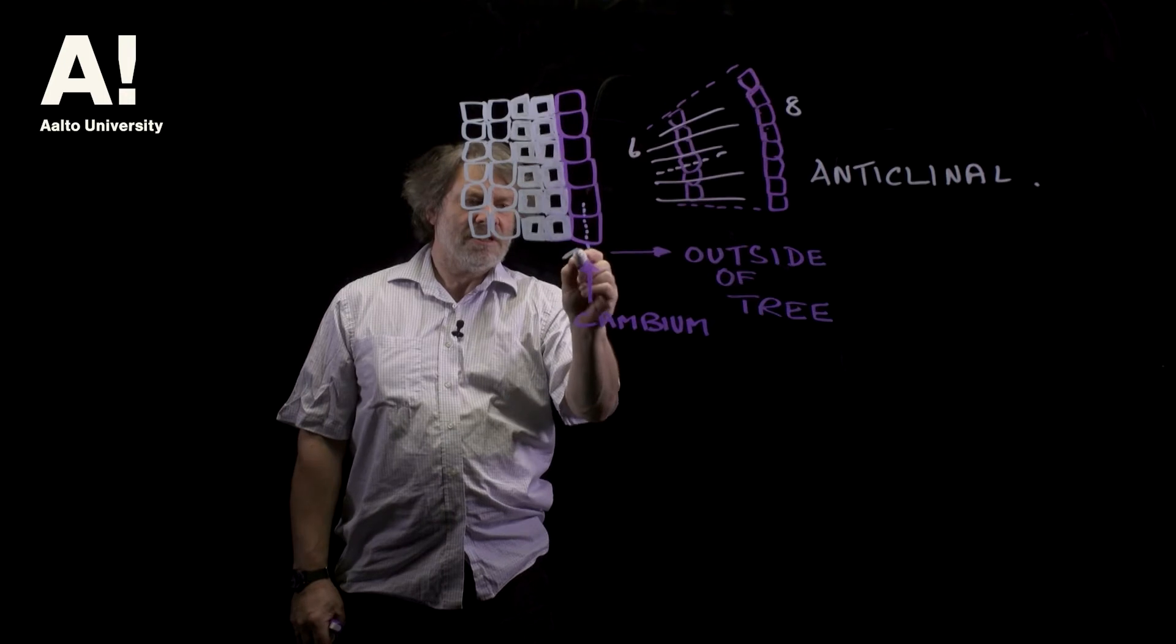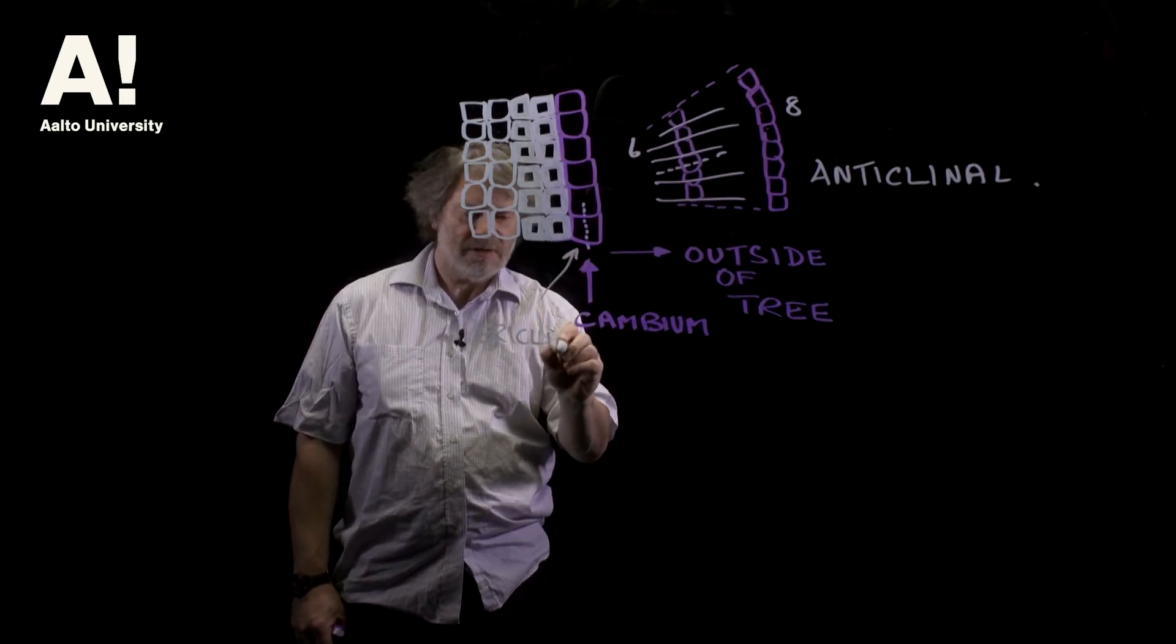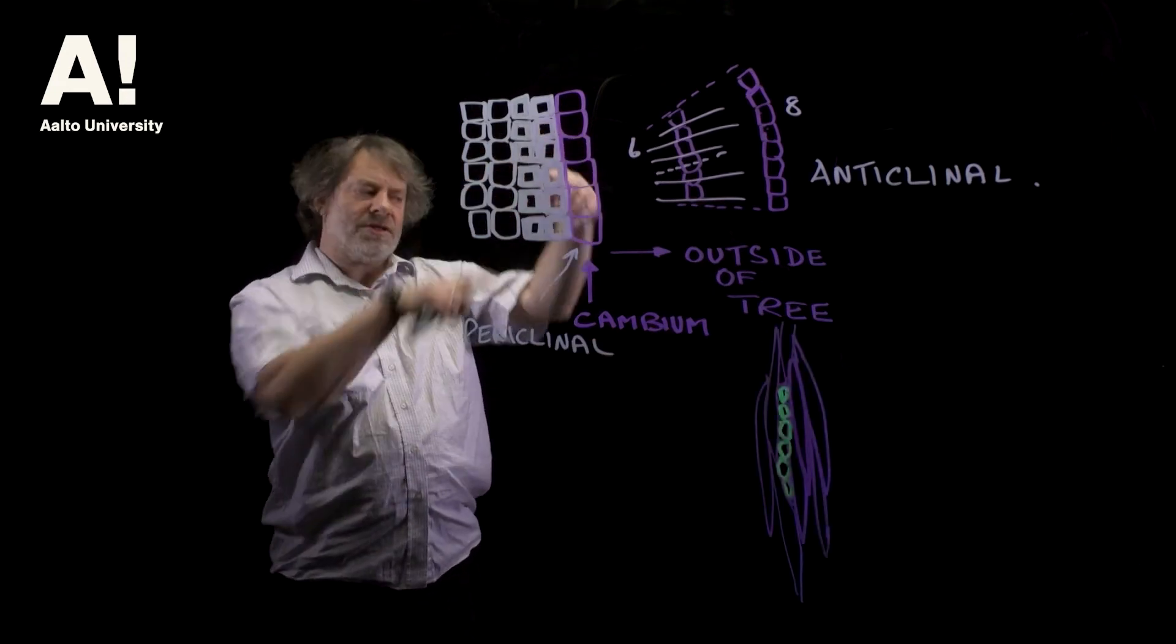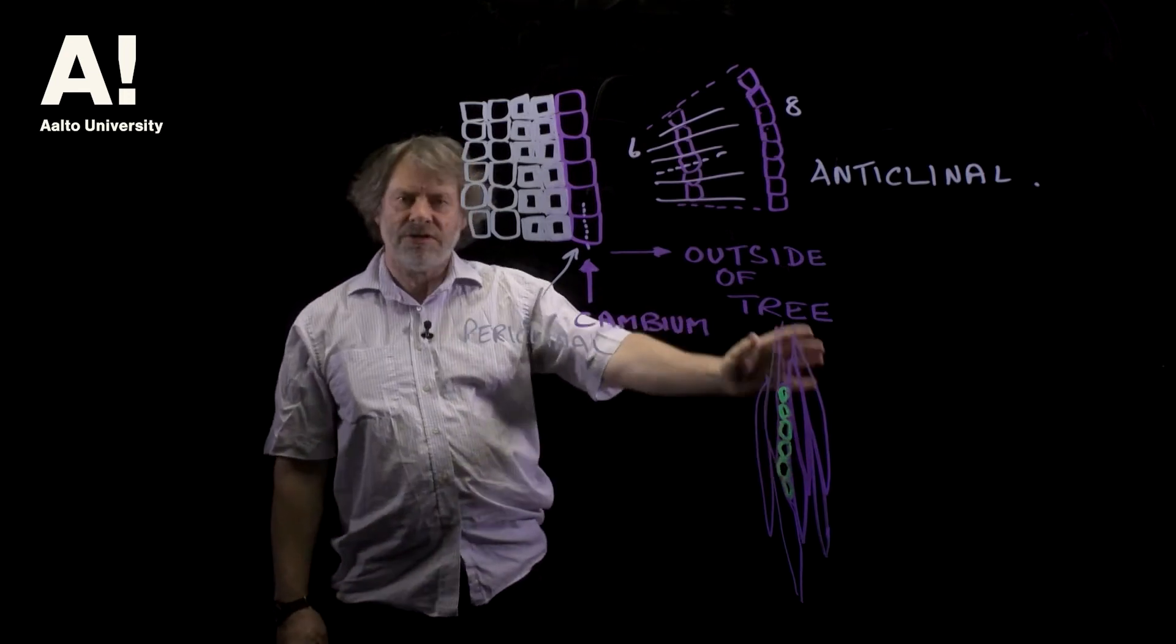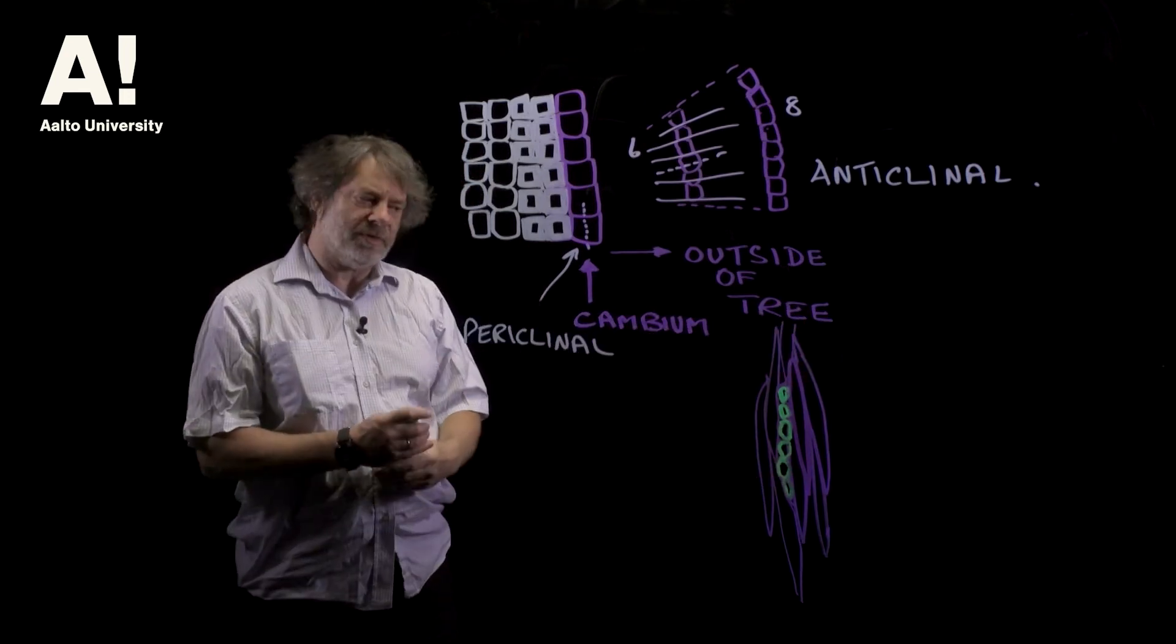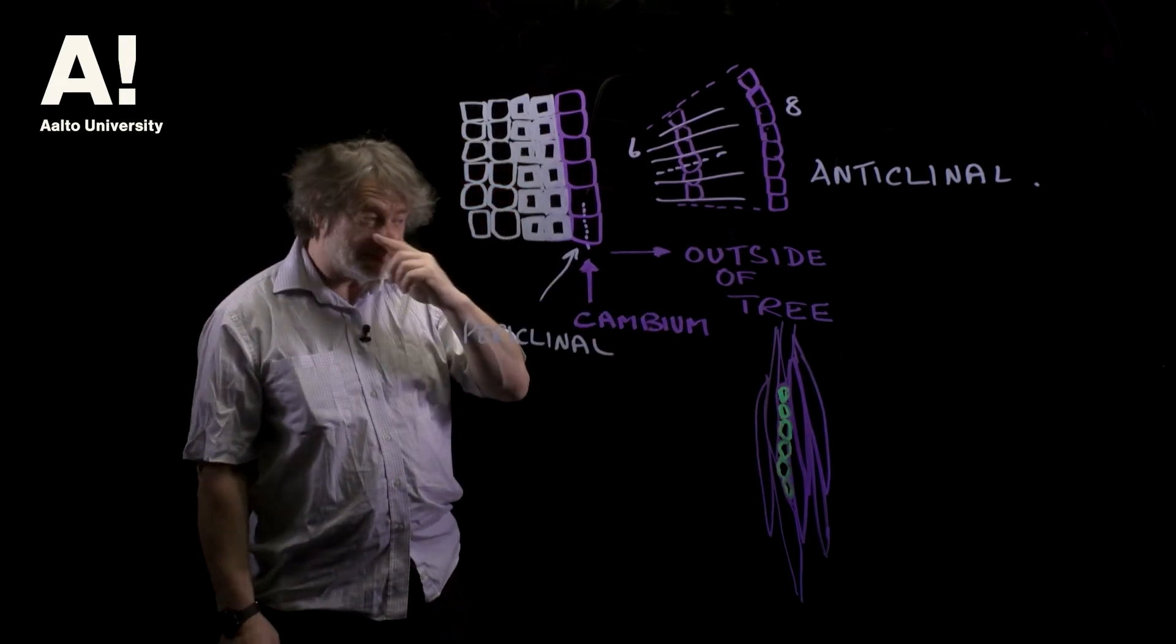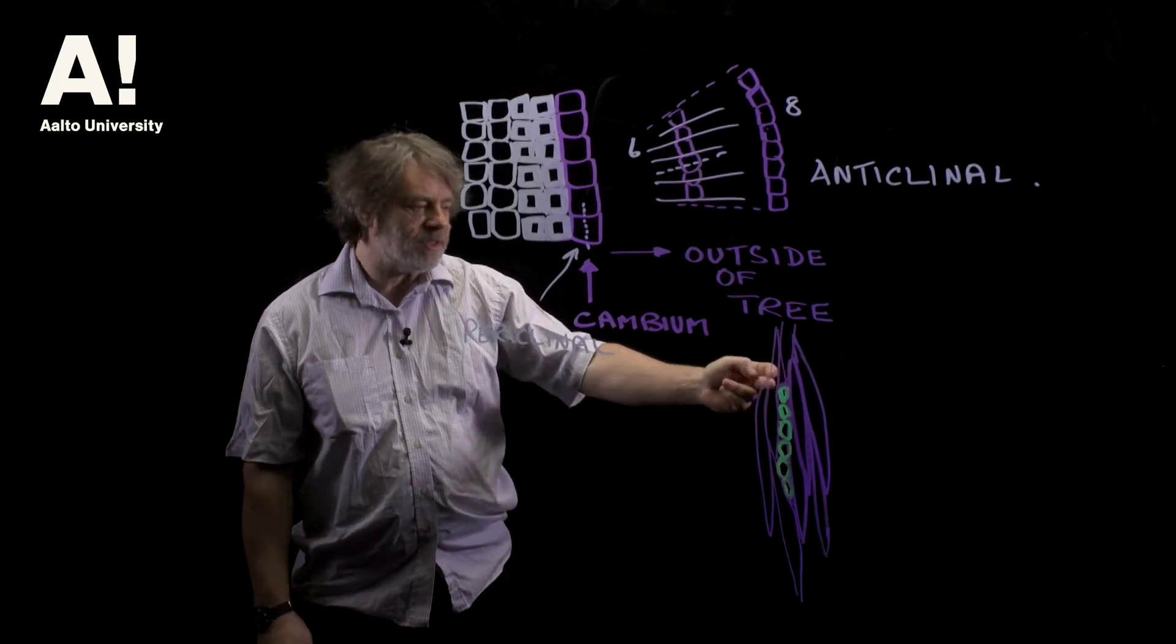And this is periclinal. So here we're looking down at the top and here we're looking from the outside in and I'm just showing that there's two different what are called fusiform initials. There's these fusiform initials that form the tracheids and the fusiform initials that form the ray cells.